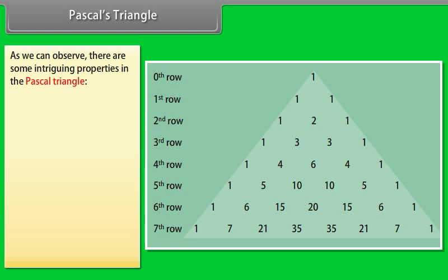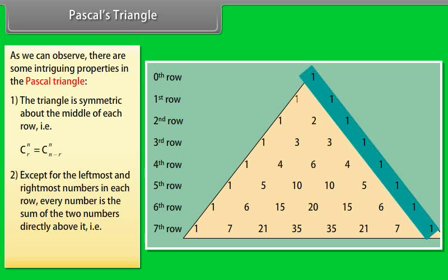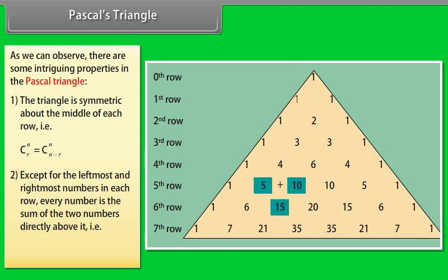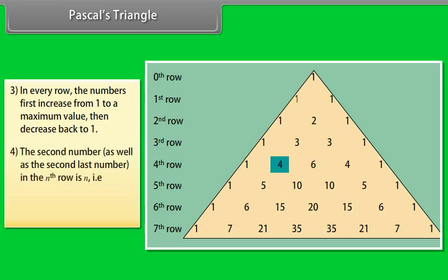There are some intriguing properties in Pascal's triangle. The triangle is symmetric about the middle of each row; that is, nCr is equal to nC(n minus r). Except for the leftmost and rightmost numbers in each row, every number is the sum of the two numbers directly above it; that is, nCr equals (n-1)C(r-1) plus (n-1)Cr. In every row, the numbers first increase from 1 to a maximum value, then decrease back to 1. The second and second-last numbers in the nth row equal n; that is, nC1 equals nC(n-1) equals n.